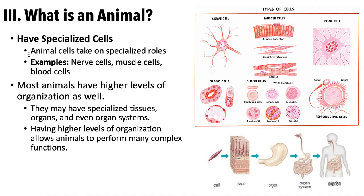Not all animal cells are the same. Within eukaryotic cells, they take on specialized roles. There are nerve cells, muscle cells, blood cells — and how they look is all very different. As we get into some of the more basic organisms, we'll look more at the cellular level, because the cells do most — really all — of the work. Their roles are extremely important.